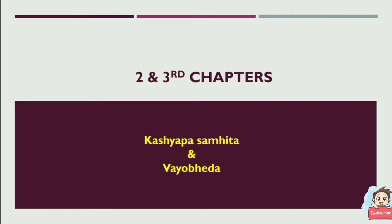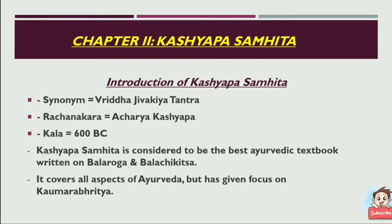Chapter 2: Kashyapa Samhita. Its synonym is Vridha Jeevakia Tantra, dated around 600 BC. Kashyapa Samhita is considered the best Ayurvedic textbook written on Balaroga and Balachikitsa. It covers all aspects of Ayurveda but has given special focus on Kaumarabhritya.